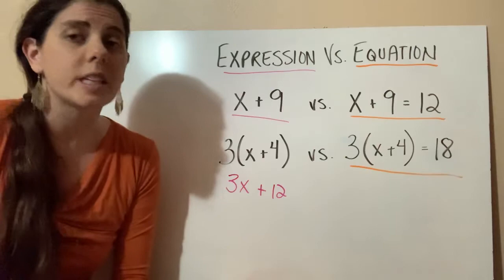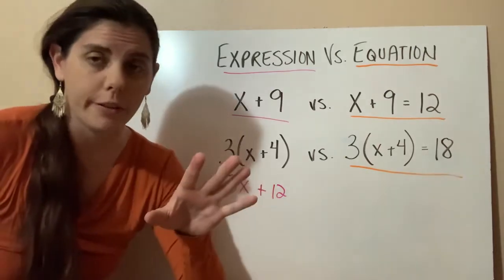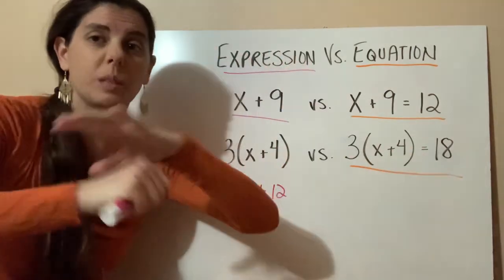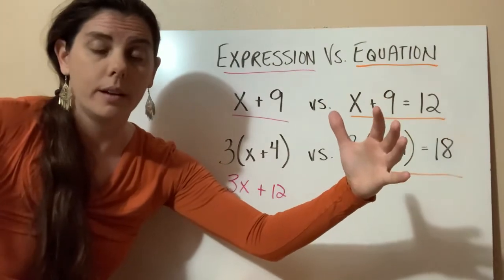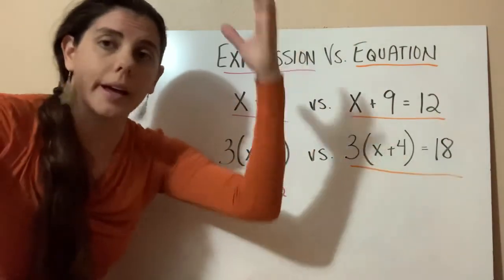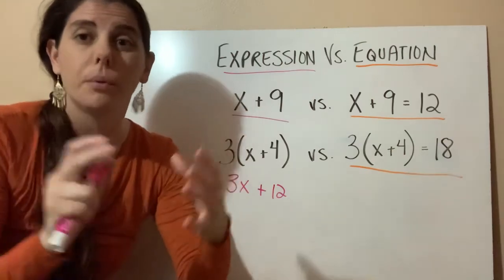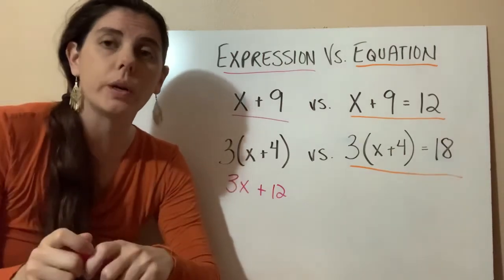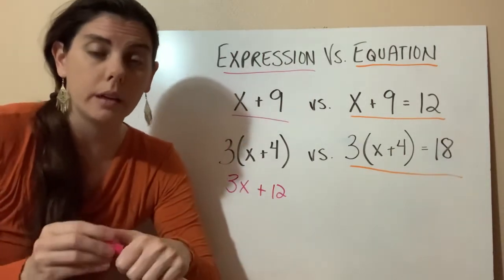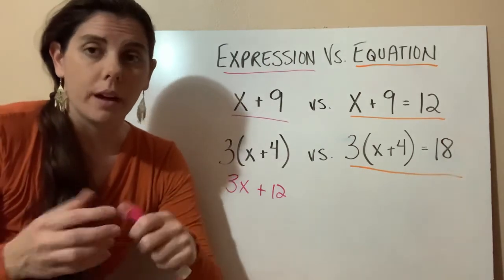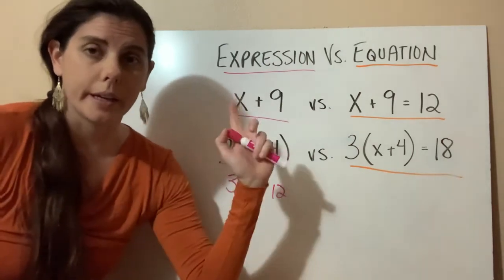So expressions can be simplified. So you could have an expression, this big, long thing, and there's no equal sign, but you could simplify it and get it down into just a couple things and make it a lot less complicated.